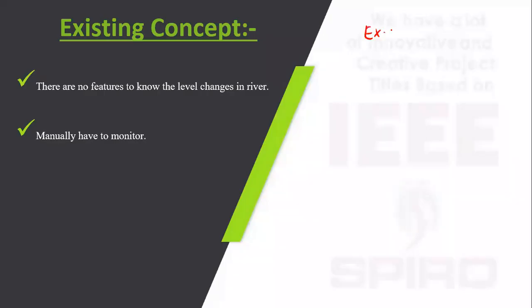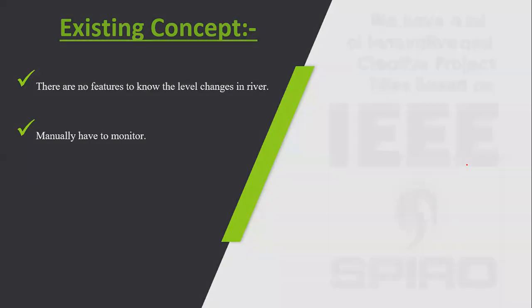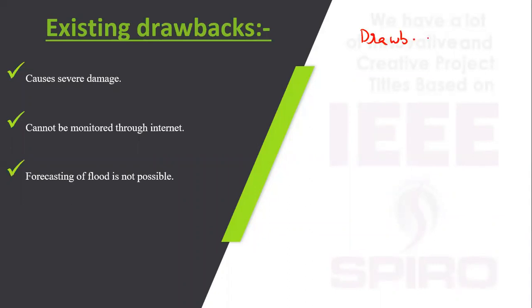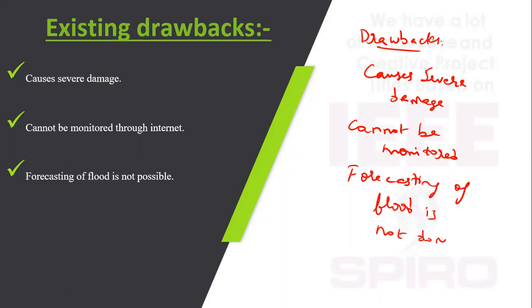In the existing system, water levels at the dams are monitored manually. The drawbacks of this approach are that it can cause severe damages, cannot be monitored manually at all times, and forecasting of floods is not done faster.